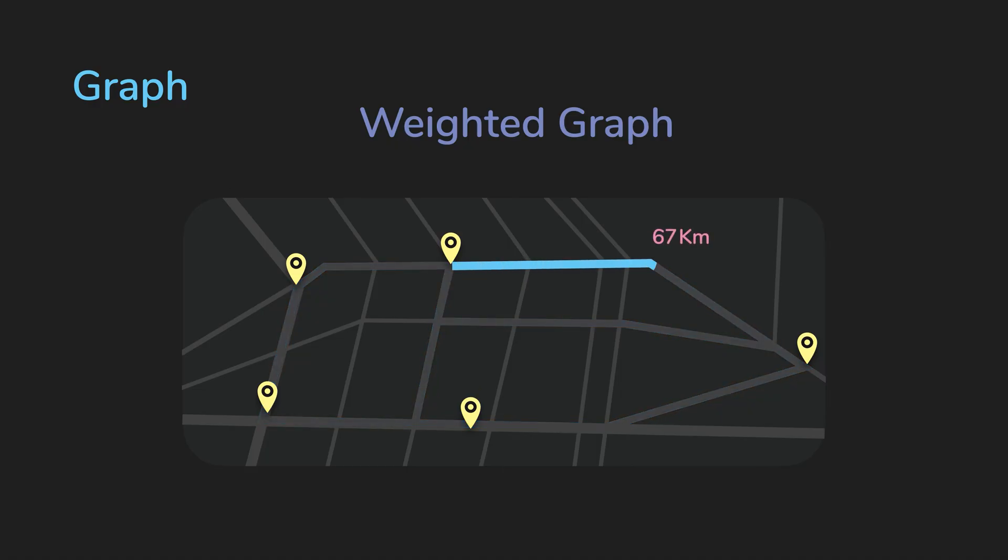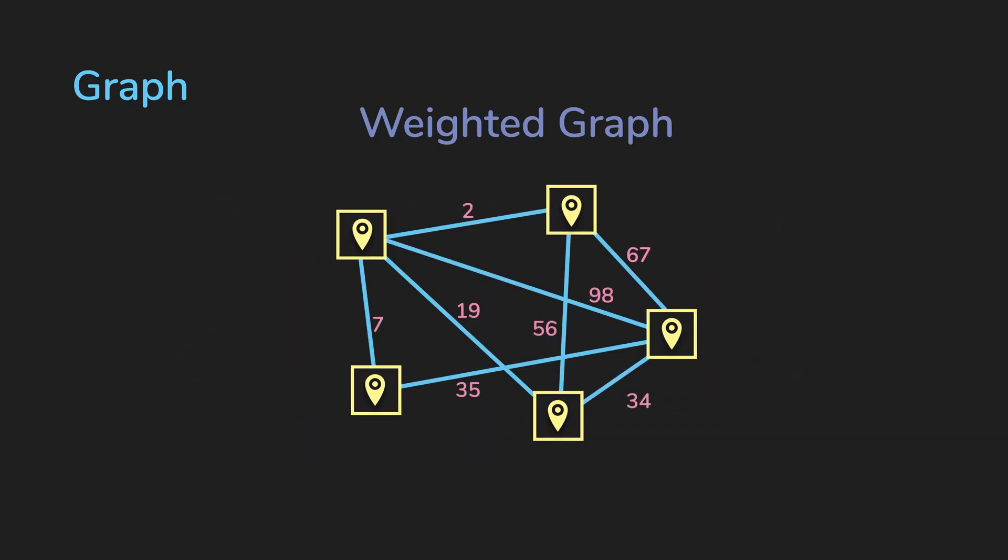But the edges also contain distance to determine how long the road is. This is useful if the relationship between two vertices is not always uniform. In an unweighted graph, the relationships are uniform, meaning all of the edges have a weight of one.